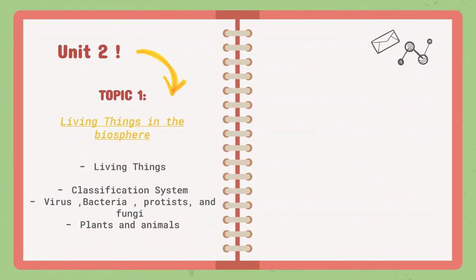In Unit 2, we have only one topic, which is Living Things in the Biosphere. It is divided into four lessons: Living Things, Classification System, Virus, Bacteria, Protists, Fungi, Plants, and Animals. The following topics are going to be covered for this unit, and it is basically going to be talking about Living Things.